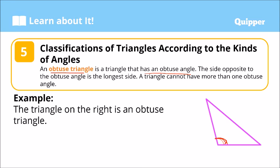So if this is our obtuse angle, yung opposite side niya — yung kaharap niyang side — the opposite one is the longest side of the triangle.